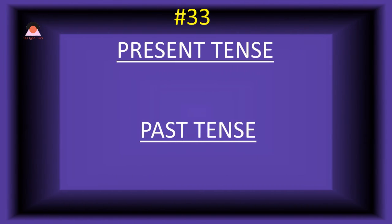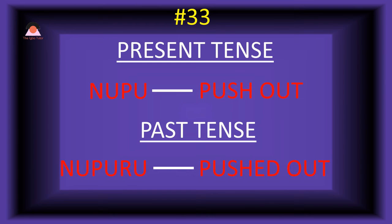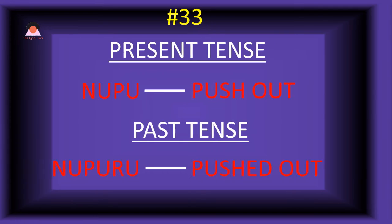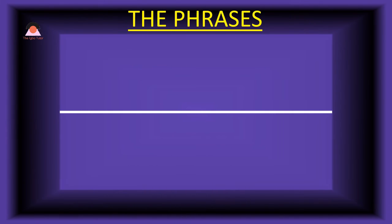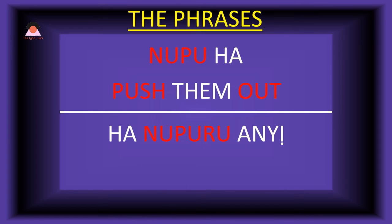Word number thirty-three: 'nupu,' meaning 'push out.' The past tense of nupu is 'nupuru,' meaning 'pushed out.' Present tense phrase: 'nupu-ha' — push them out. Past tense: 'ha-nupura-ni' — they pushed us out.